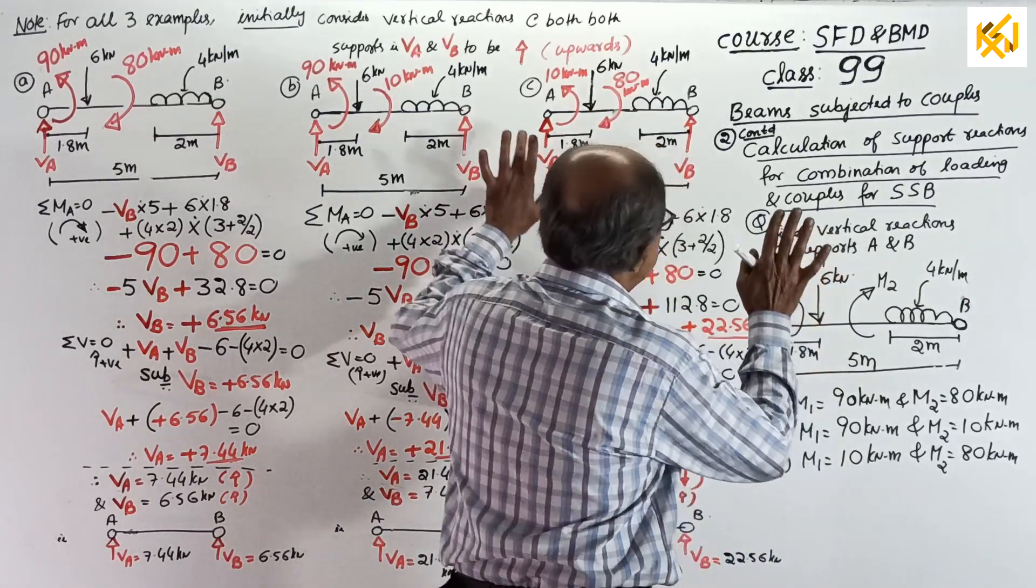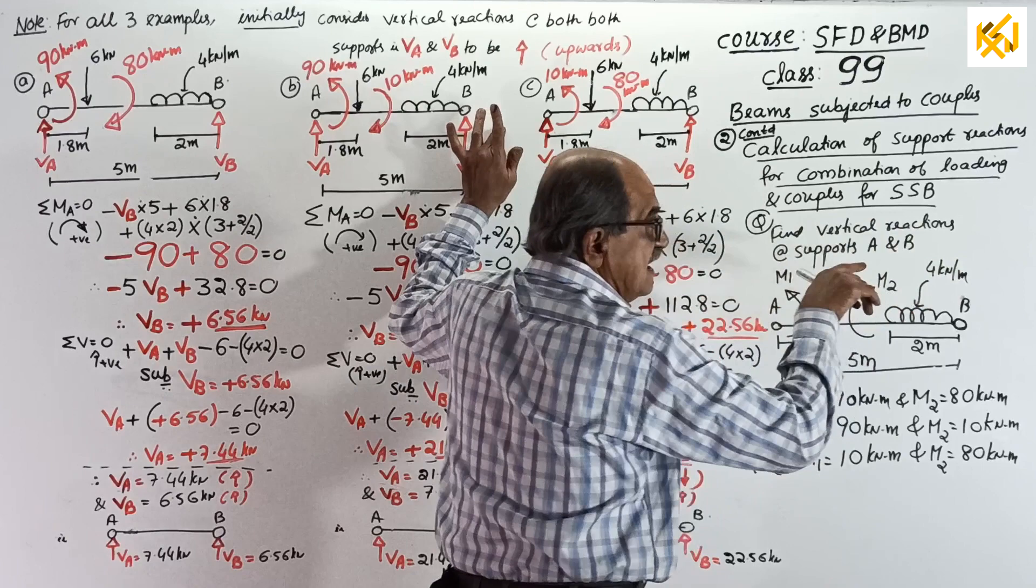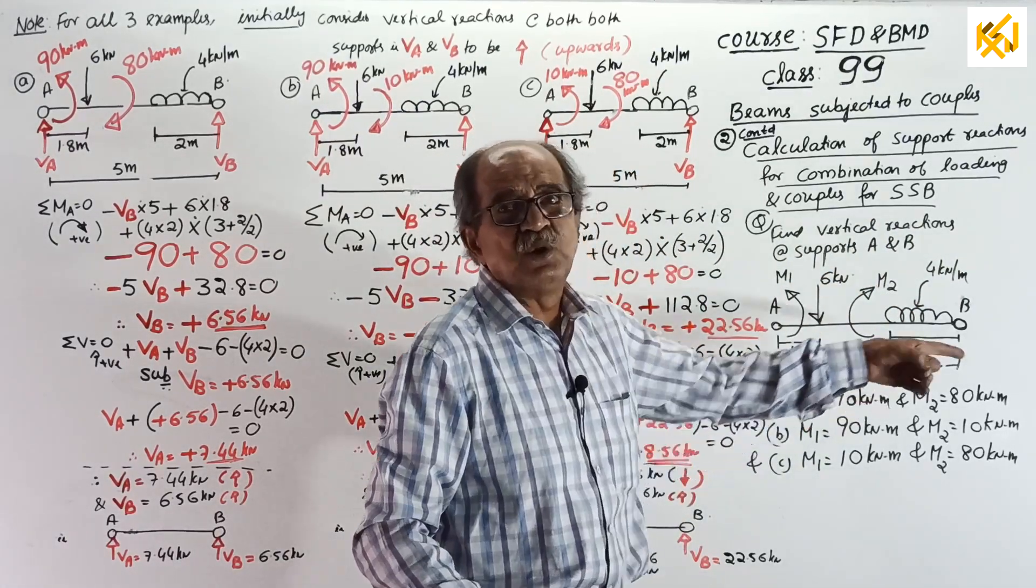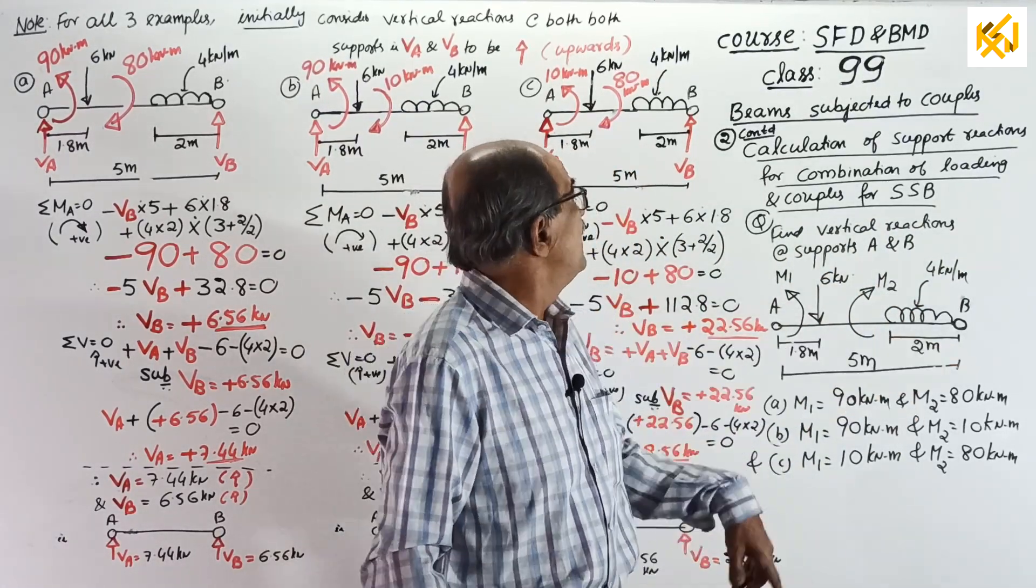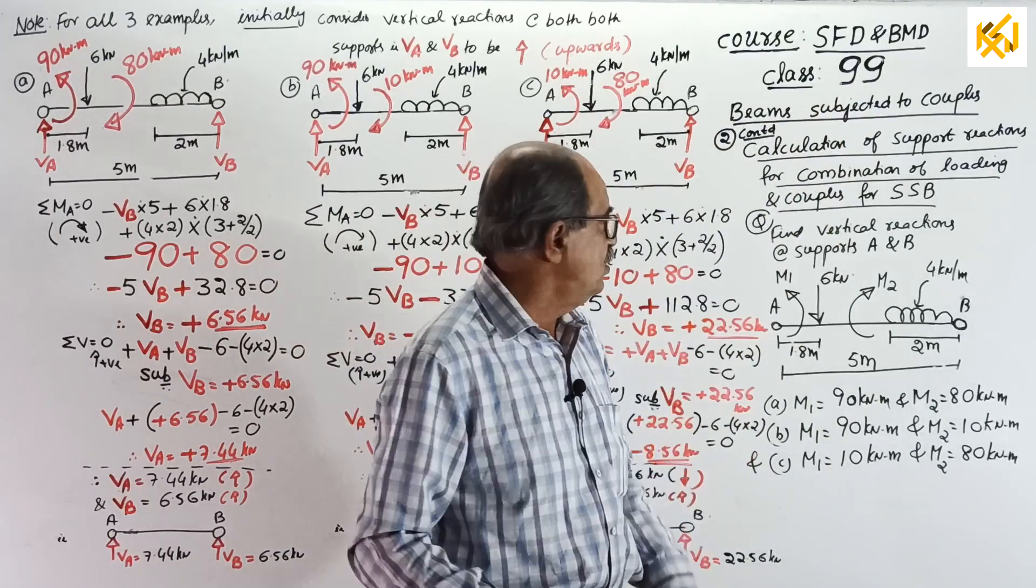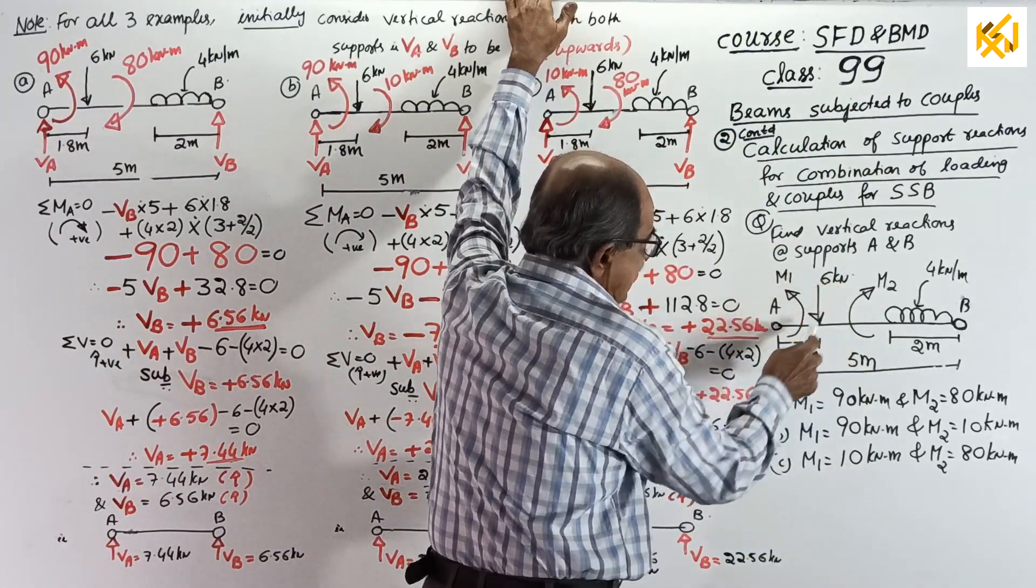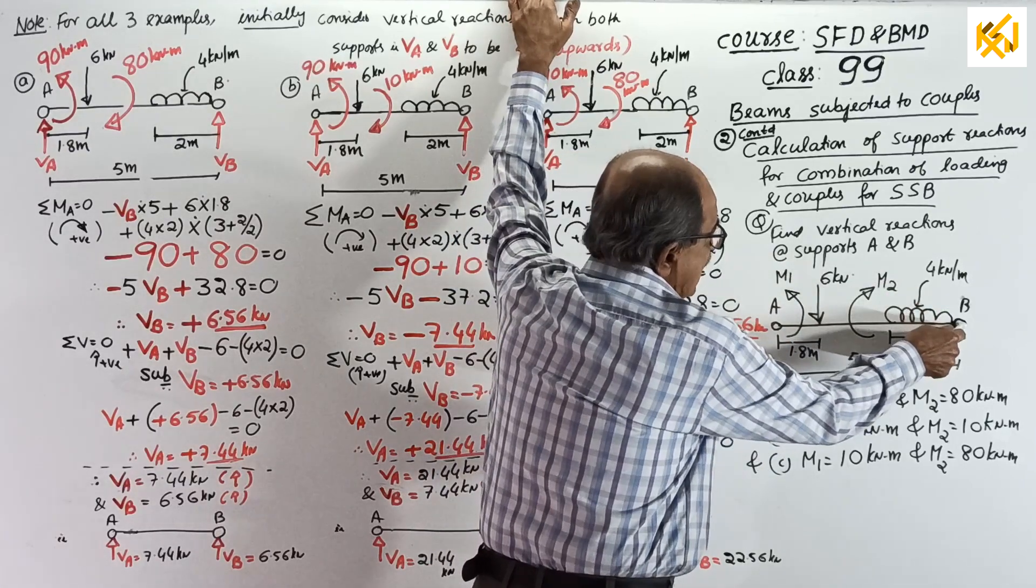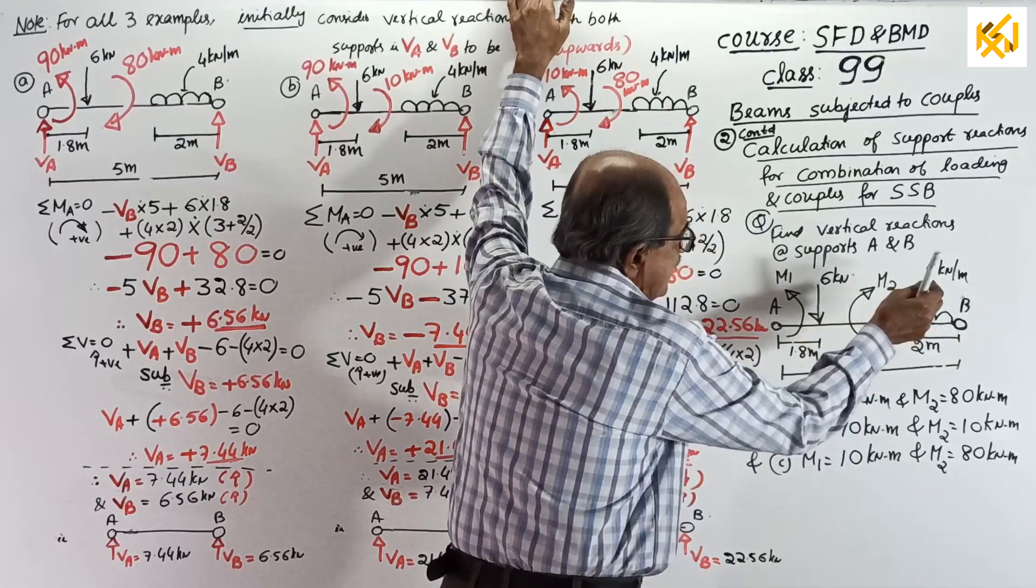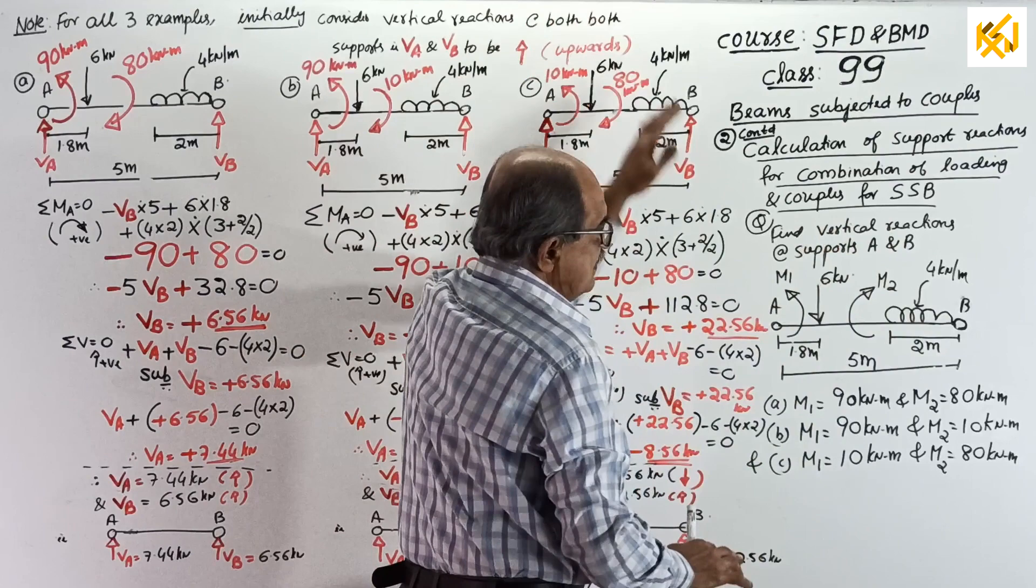Now, our purpose is to only find vertical reaction. Later, I will go for one hinge, one roller, etc. That I will explain in class number 101. Okay. Now, see, point load of 6 kN at 1.8 meter, UDL of 4 kN per meter for 2 meter, starting from right end. This is the loading.